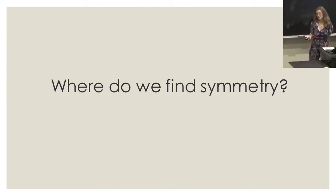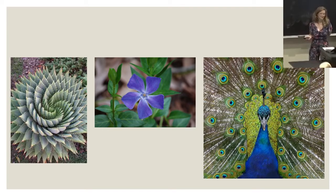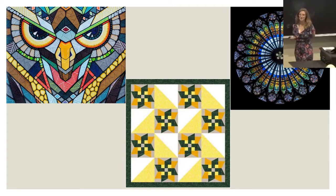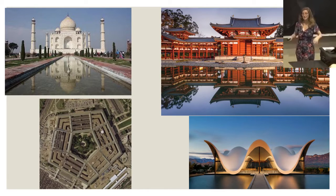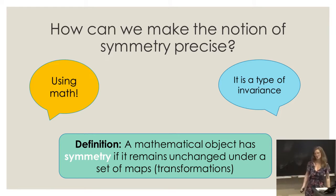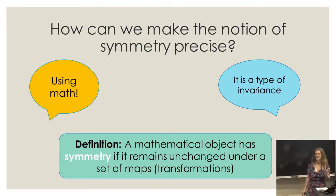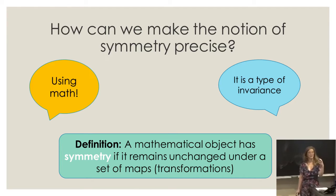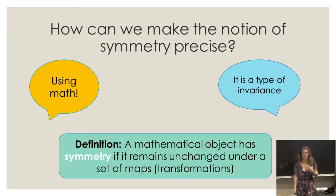You can find symmetries in many places — in nature, there are beautiful pictures online. You can also find it in the arts, in architecture, and in many other things: physics, chemistry. So how can we make this notion of symmetry more precise? We are in a math conference, so we want to use math. The general idea is that symmetry is a type of invariant: a mathematical object X has a symmetry if it's unchanged after applying certain operations, maps, or functions.